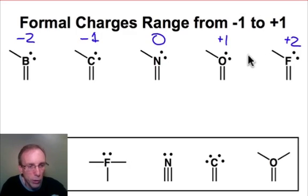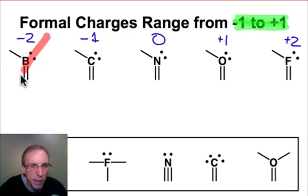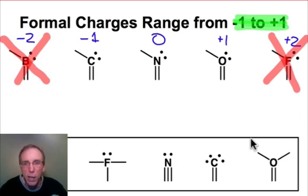There's an important rule you're going to want to take note of. For the period 2 elements, the formal charge must always be in the range of minus 1 to plus 1. Formal charges outside that range are simply unreasonable. We never encounter those configurations. That means it's completely unreasonable to ever see boron with a double bond domain, a single bond domain, and a lone pair because it has a formal charge of minus 2 outside the range. And likewise, we're never going to see fluorine with a double bond, a single bond, and a lone pair domain.